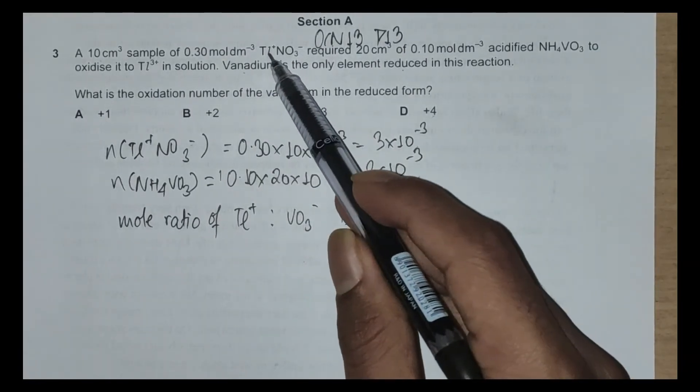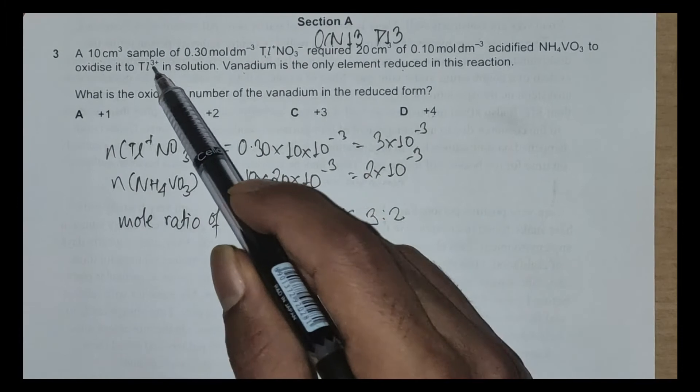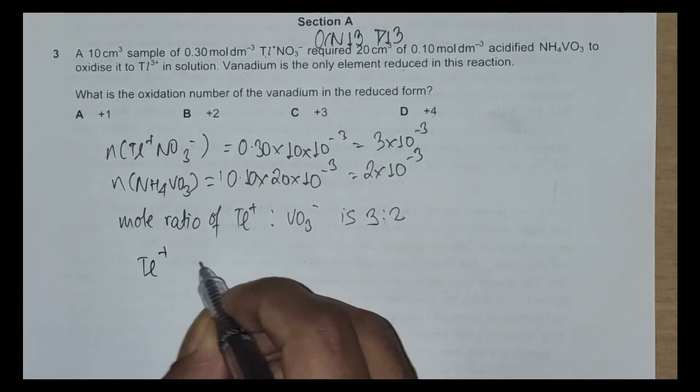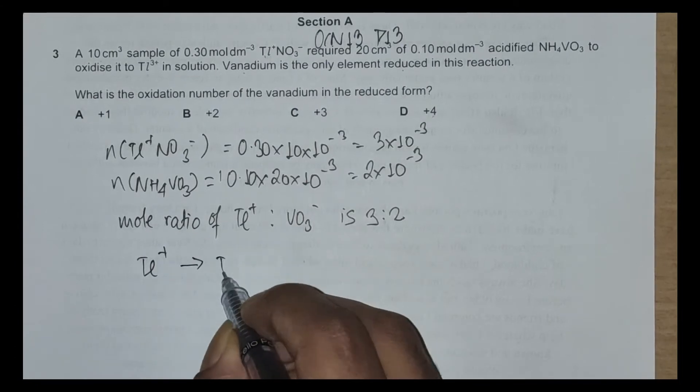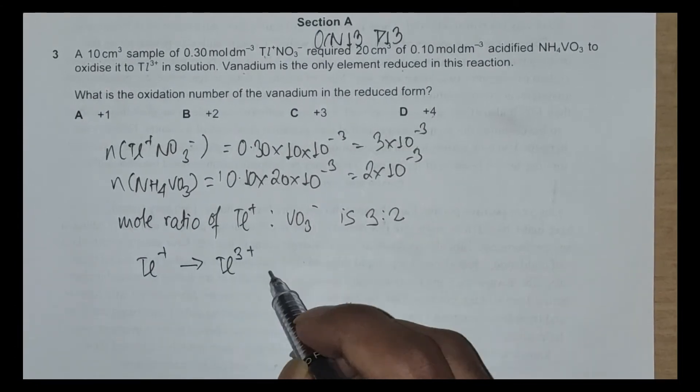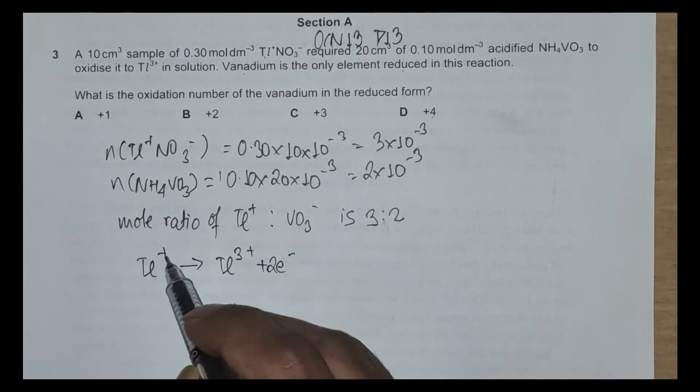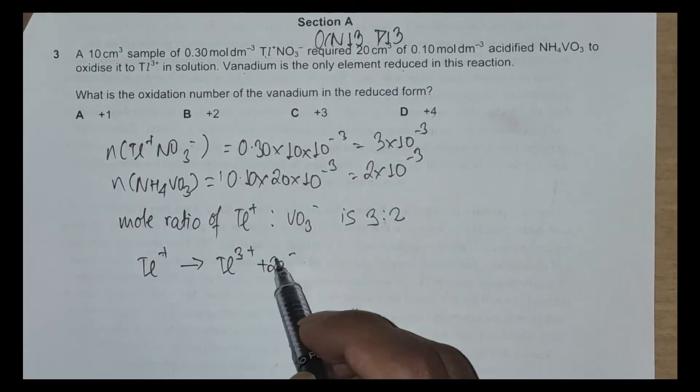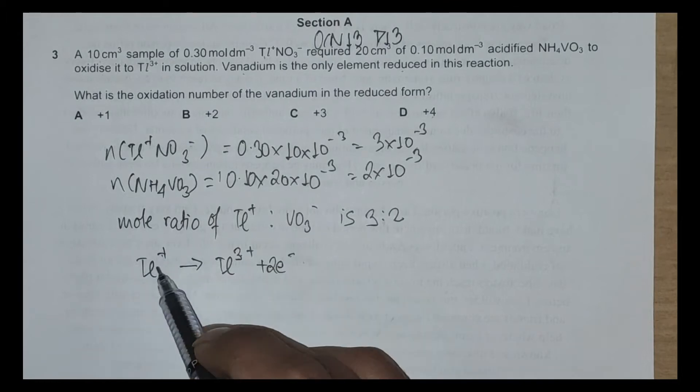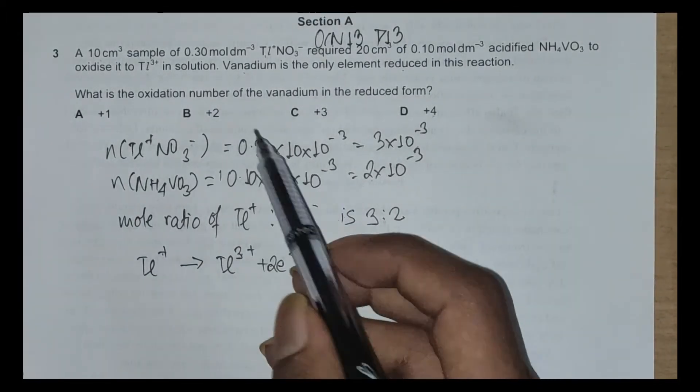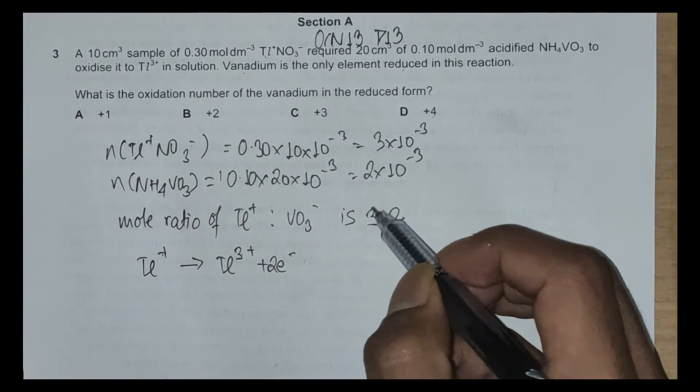Now what we have is TL⁺ oxidizing to TL³⁺. We have TL⁺ getting oxidized to TL³⁺, and to balance this equation we need to have 2 electrons because this is +1 to +3, and now -2 balances it, +1 on both sides.